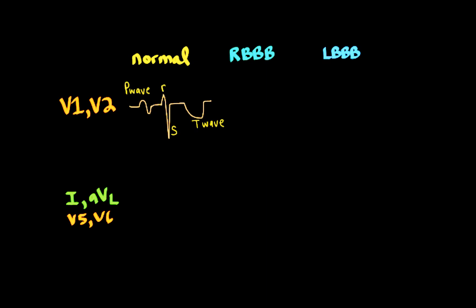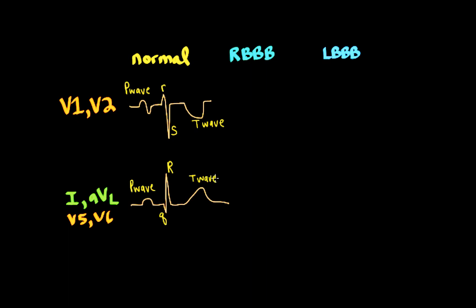In leads 1, AVL, V5, and V6, we draw an upright P wave, PR segment, and then a small Q with a dominant R for the QRS complex. The ST segment is isoelectric and the T wave is upright. So we label: the P wave, a small Q and big R for the QRS complex, an isoelectric ST segment, and an upright T wave — demonstrating QRS complex and T wave concordance.